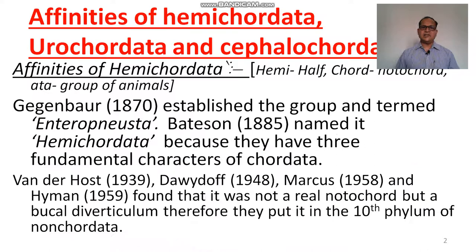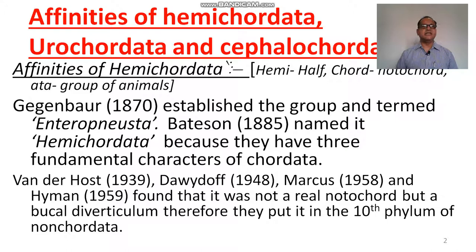Affinities of Hemichordata. Hemichordata means half; Chordata means notochord-bearer animals. Bateson in 1885 named it Hemichordata because they have three fundamental characters of Chordata, according to Bateson.